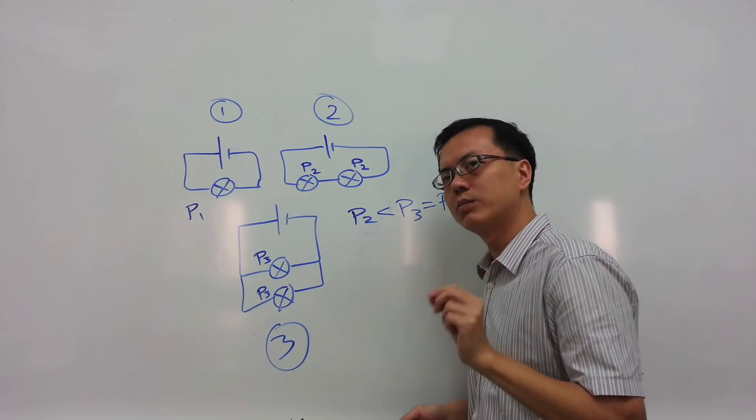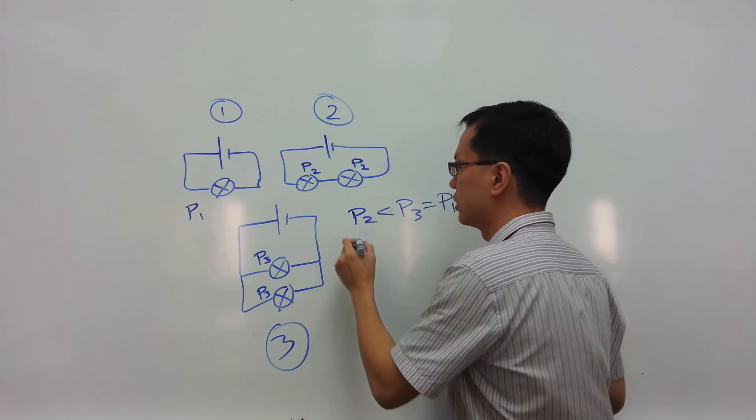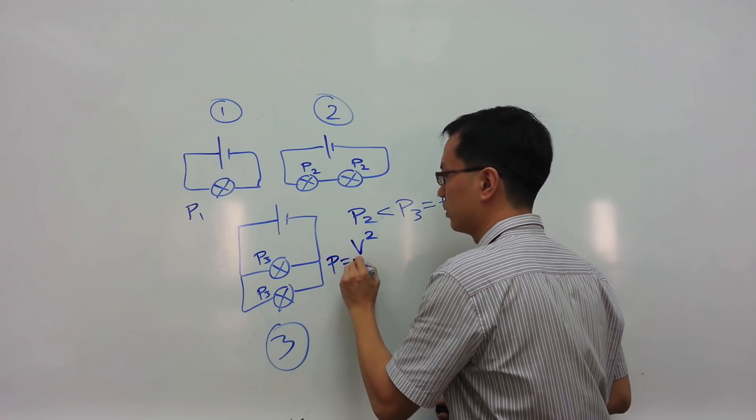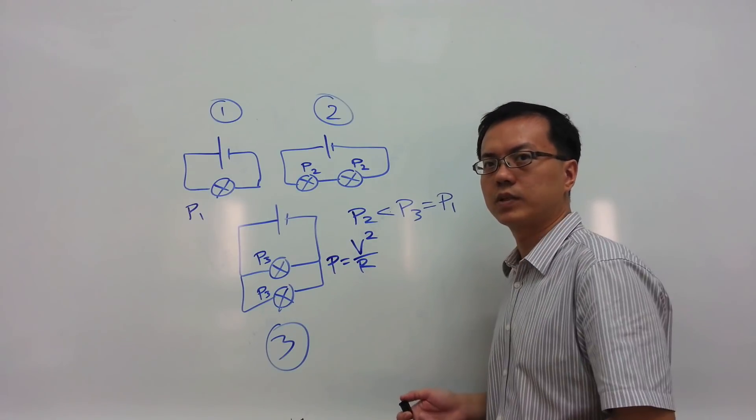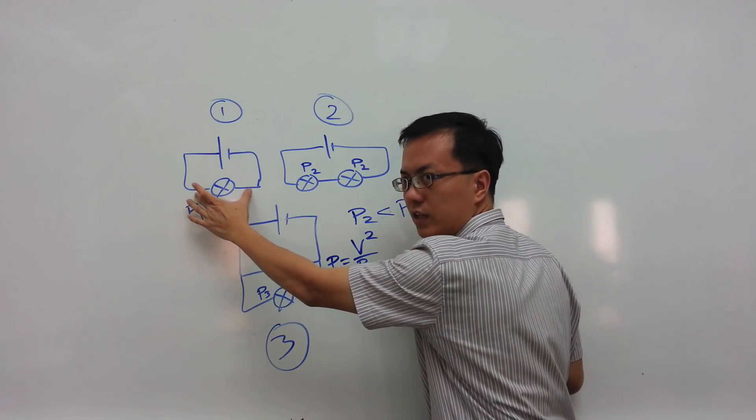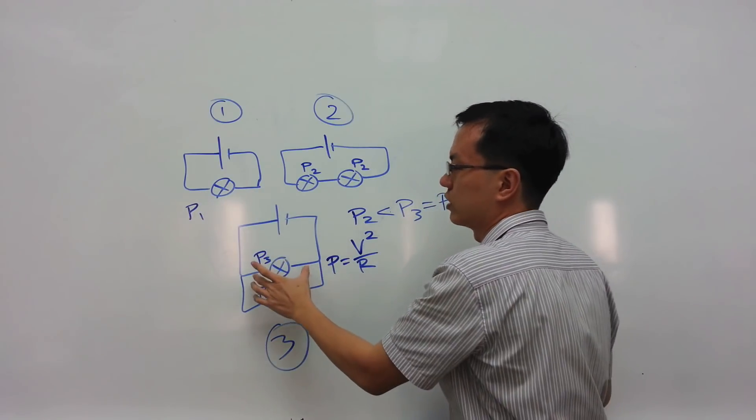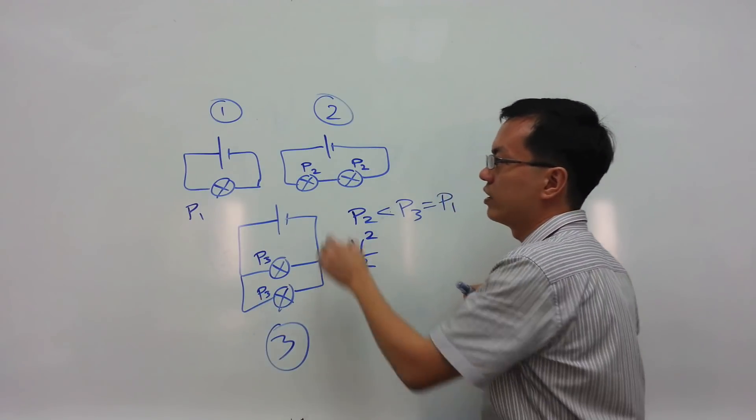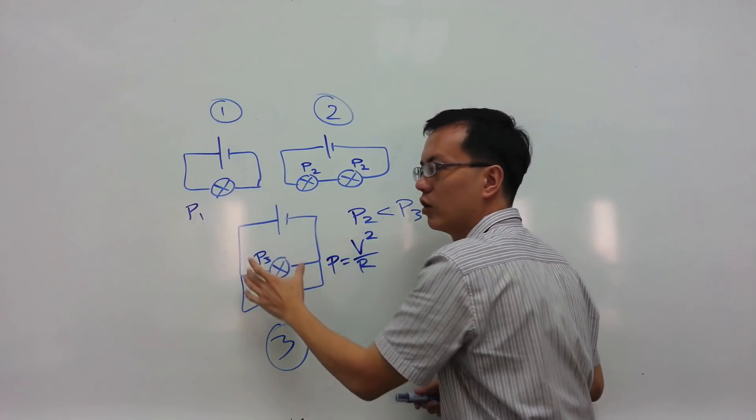So in order to determine the brightness of a light bulb, we look at the power dissipated, which is proportional to V square, because power is equal to V square over R, assuming that these are the same kind of light bulbs. So the voltage across this light bulb in diagram 1 is the same as the voltage, or the potential difference across each light bulb in diagram 3, whereas the voltage across the light bulbs in diagram 2 is half of that in diagram 1 or 3.